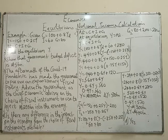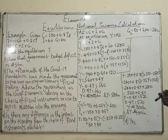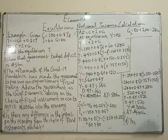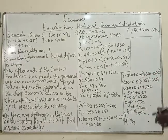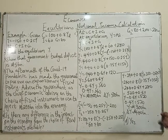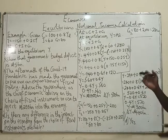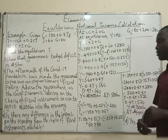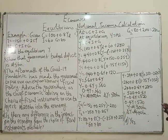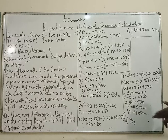So the change in Y from the tax cut is 400 billion. What would you recommend to the government? The recommendation is to increase government spending, because although both are expansionary fiscal instruments, government spending has a bigger effect than the reduction in taxes — the tax cut.